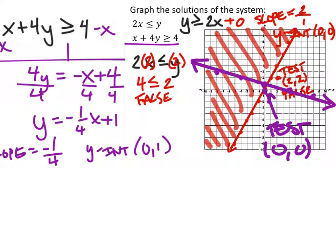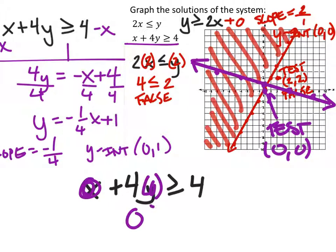And use the original as well? Yes. I'm going to go back to the original equation. So, there's our equation. Replacing the x and the y with 0, it tells us that 0 is greater than or equal to 4. False. So, we'll have to shade above that line.